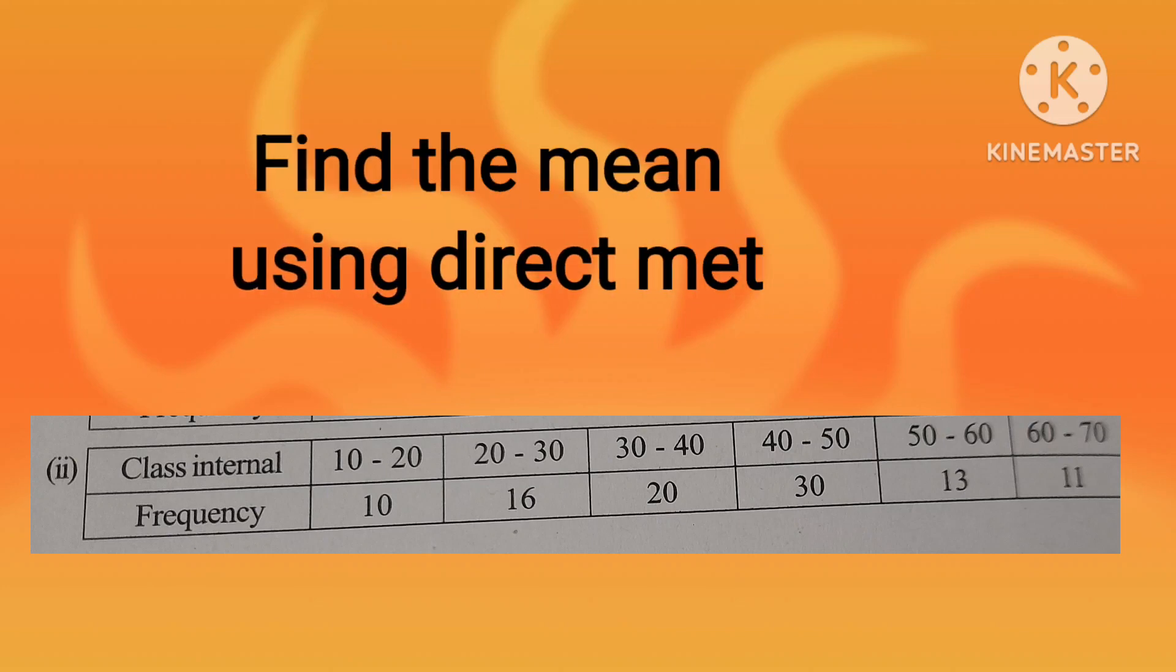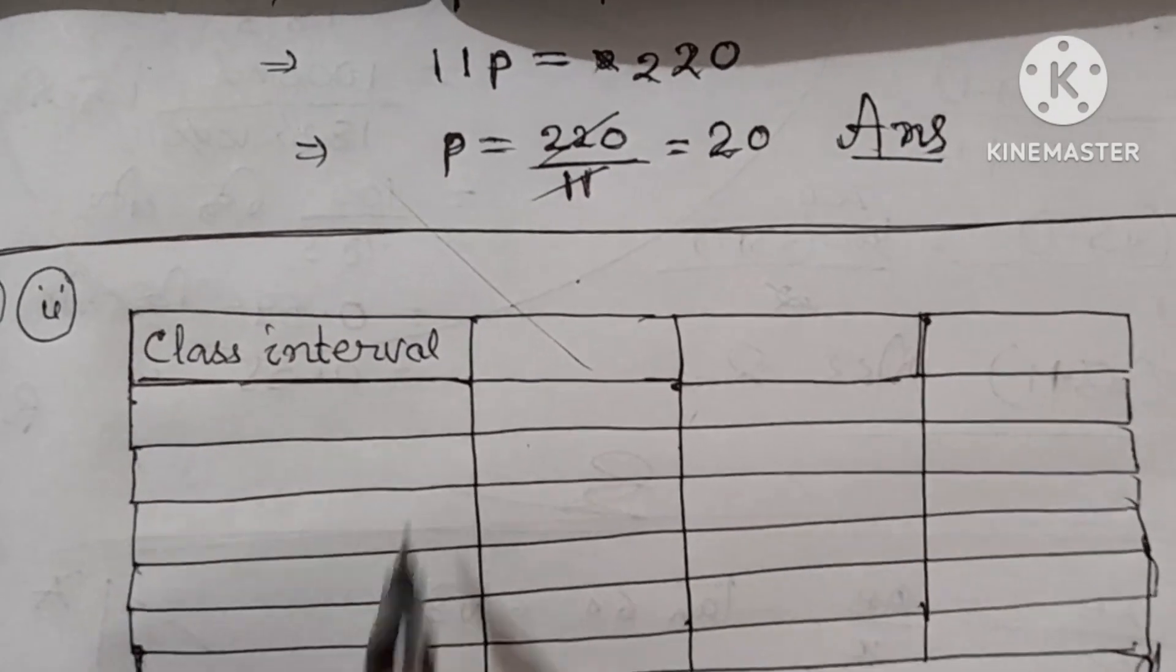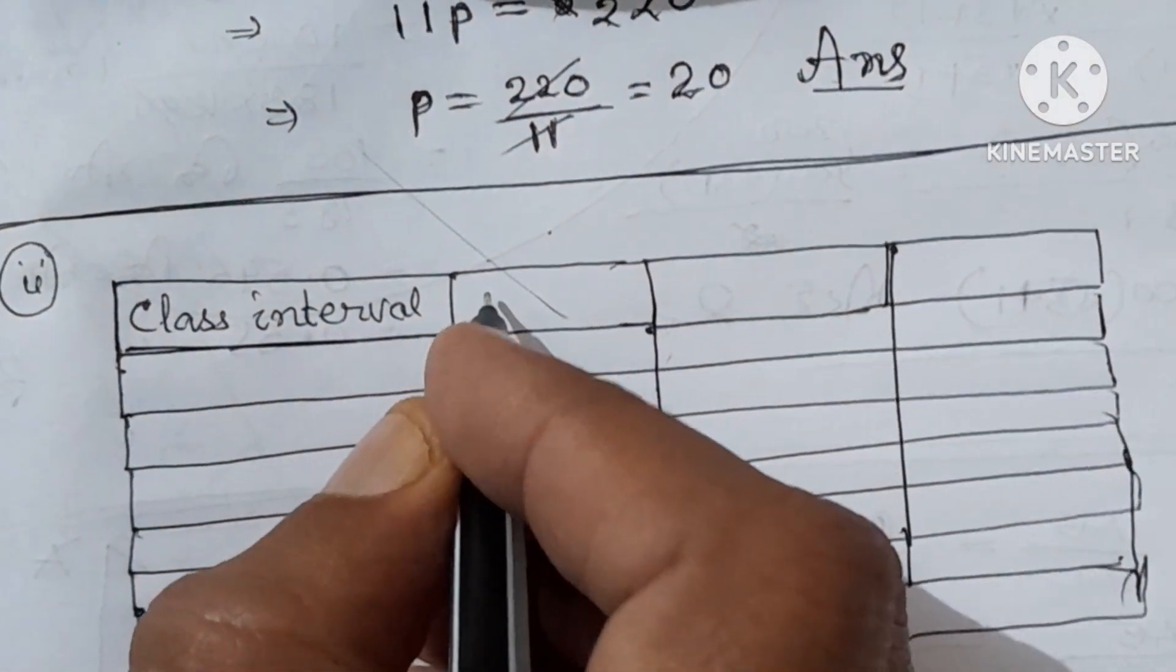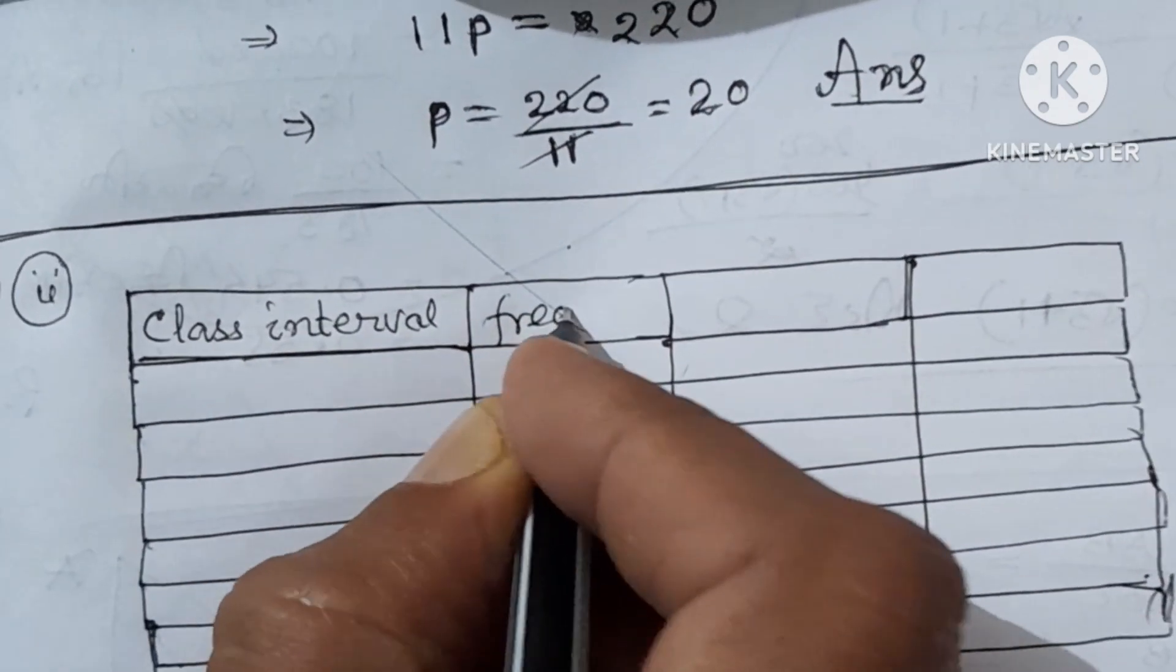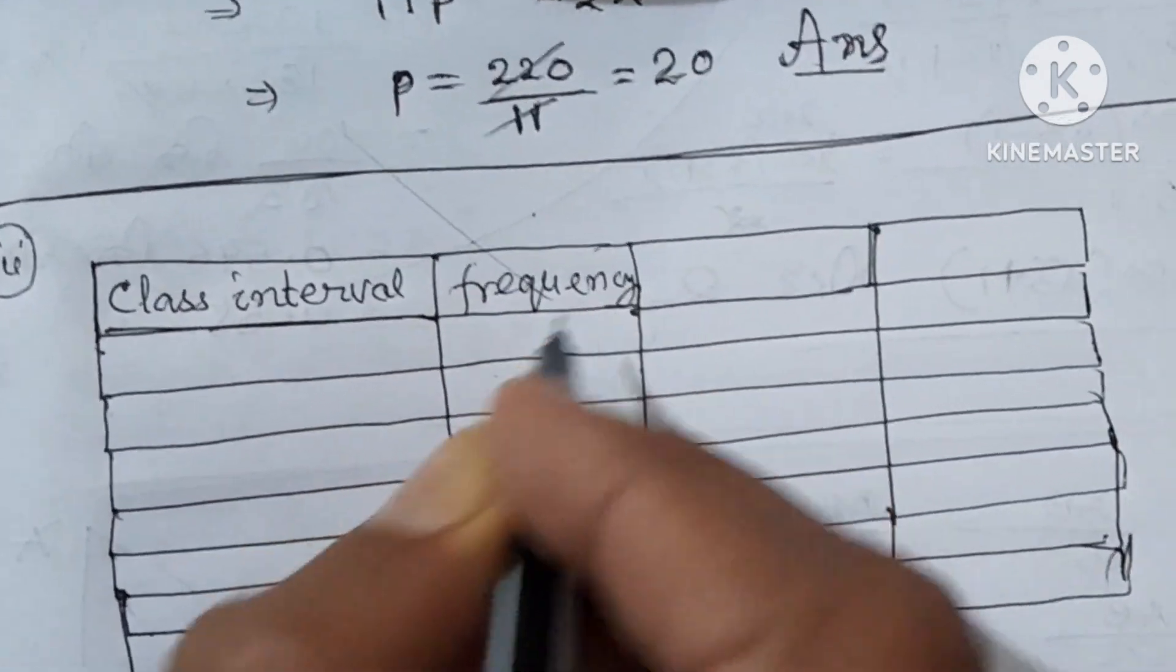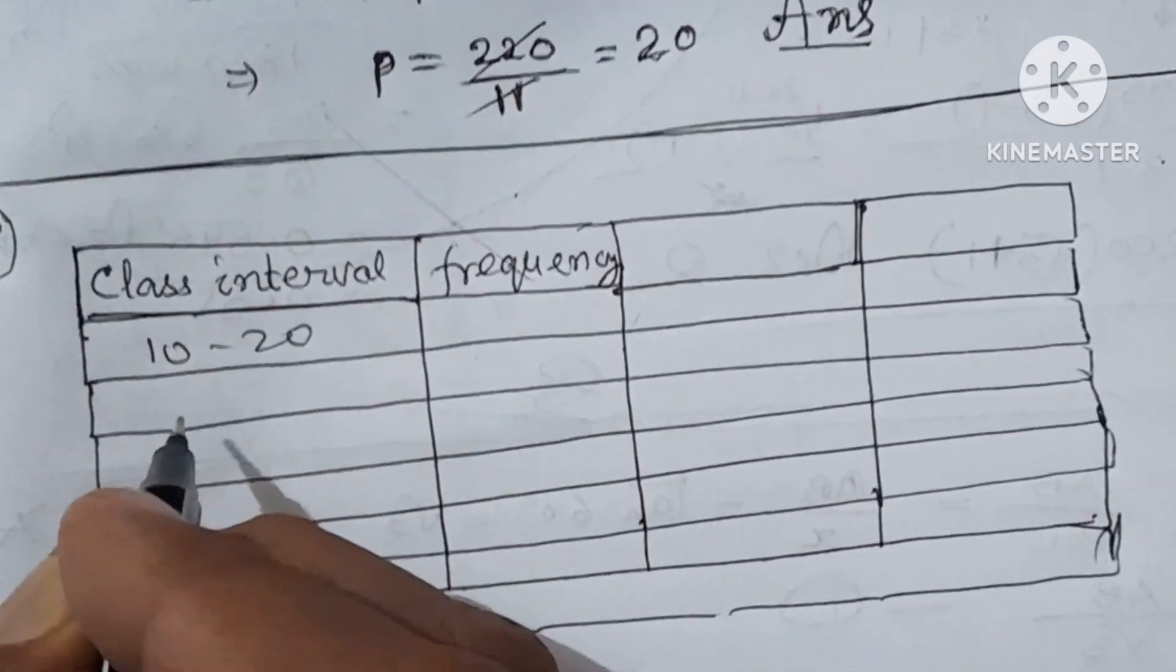In this video we learn to find the mean using direct method. At first we will make a grid like this and put the name of the rows. The first row is class interval, second row is frequency.